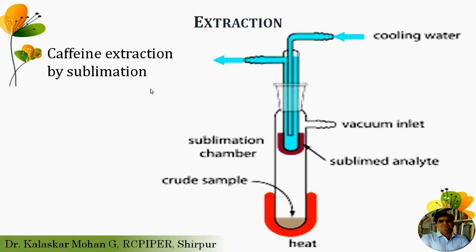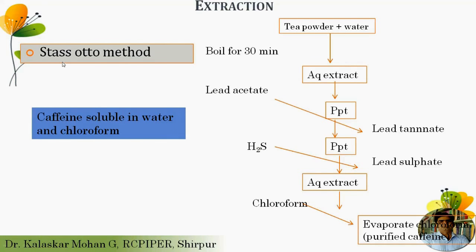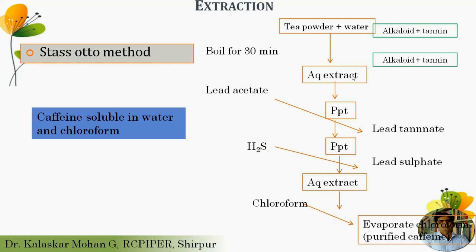Another method is the old method known as the Toss-Kurtow method, which was designed for the extraction of caffeine from tea leaves. Tea leaves contain caffeine along with tannins, and both tannins and caffeine show solubility in alcohol and water. So some manipulation steps are carried out to remove the tannins and then extract the caffeine. The tea powder is boiled with water for 30 minutes to get an aqueous extract. This aqueous extract contains alkaloids and tannins, since both are highly soluble in boiling water.